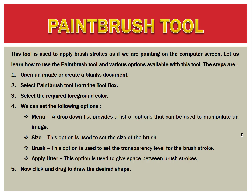We can set the following options. First is the menu — a drop-down list that provides options to manipulate an image. Second is size — used to set the size of the brush. Next is brush — used to set the transparency level for the brush stroke. Next is apply jitter — used to give space between brush strokes. Finally, click and drag to draw the desired shape.